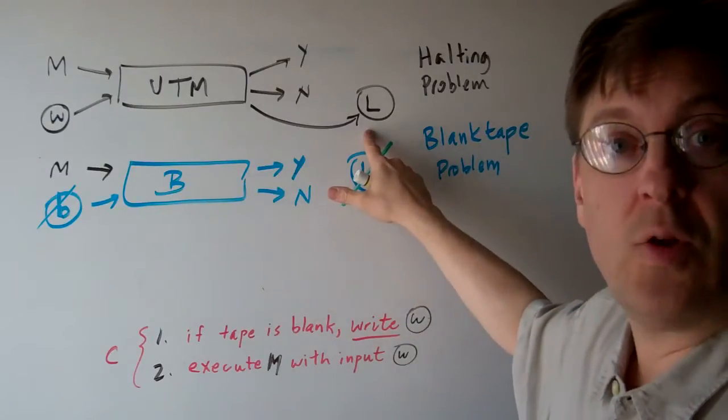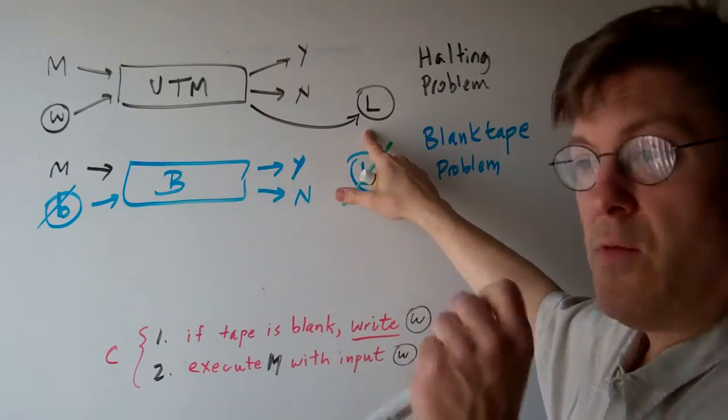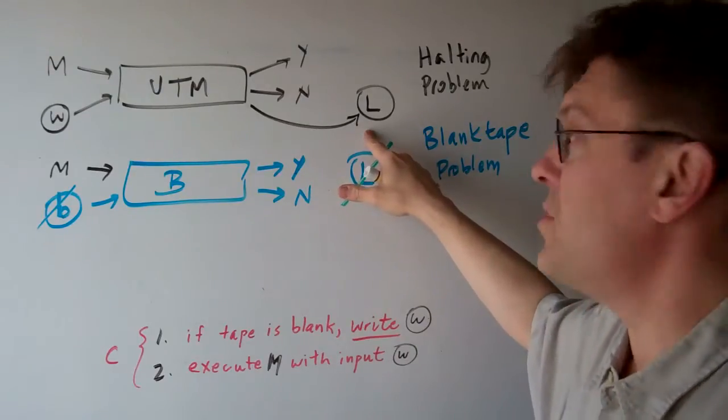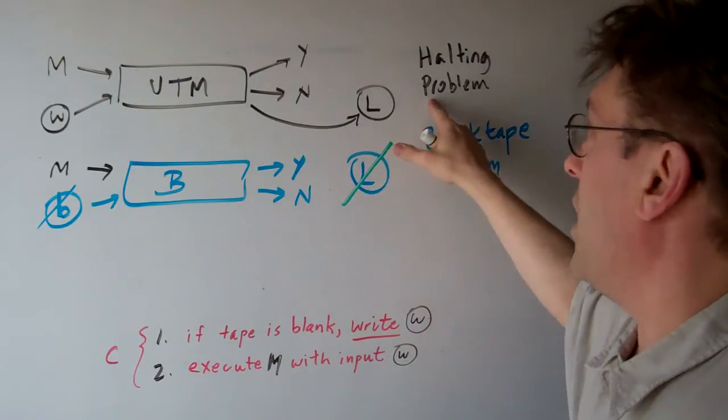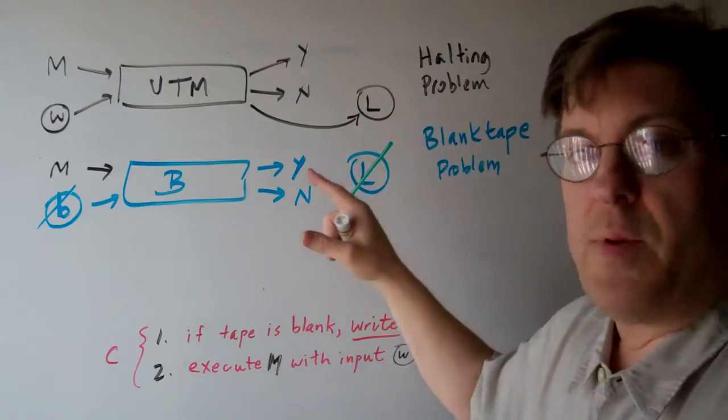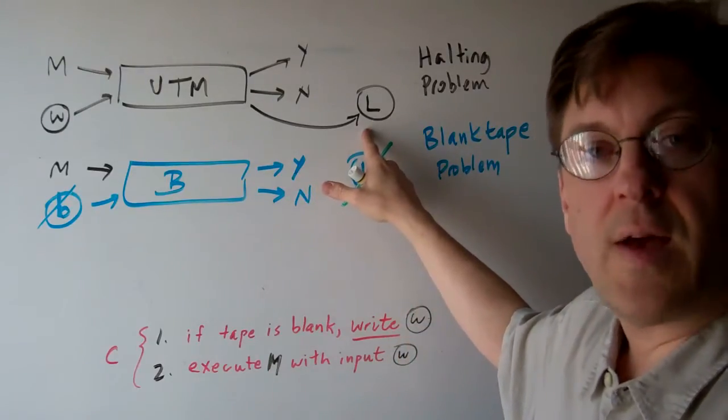or it's possible it might loop forever. So we basically have one, halt, two, crash, three, loops forever. The halting problem basically says that you can never be sure that the machine won't loop forever. It's undecidable.